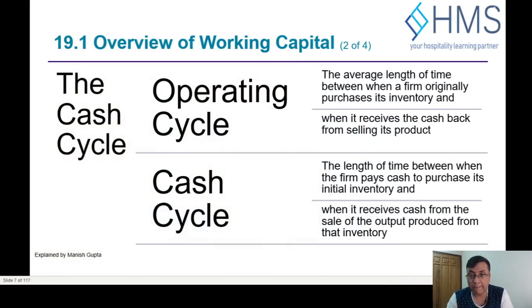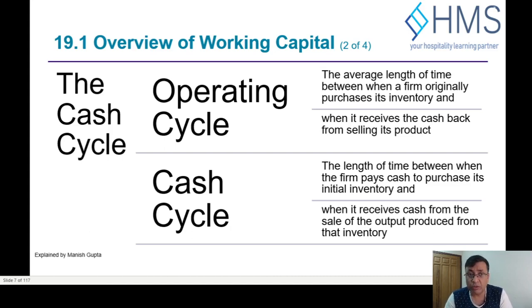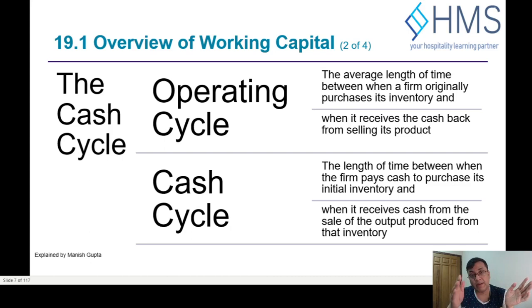Let us dive into the operating cycle and cash cycle of a company. The operating cycle means the average length of time between when a firm originally purchases its inventory and when it receives the cash back from selling the product. It starts from the day you purchase inventory and ends when you collect money from customers.